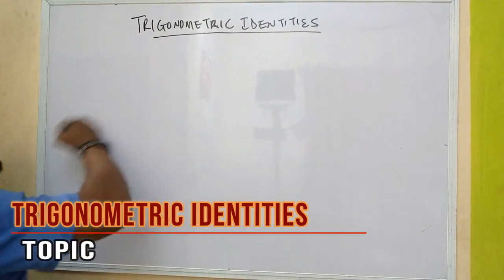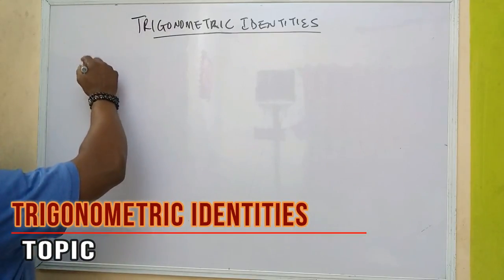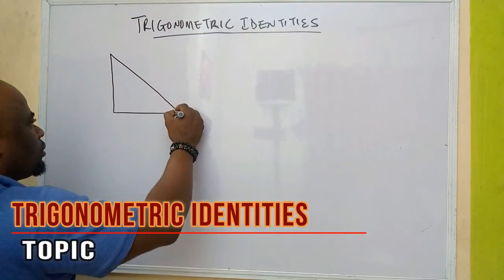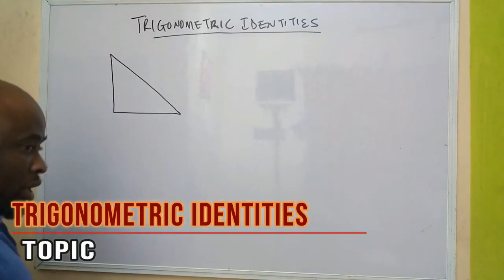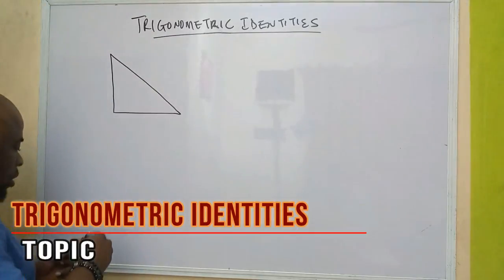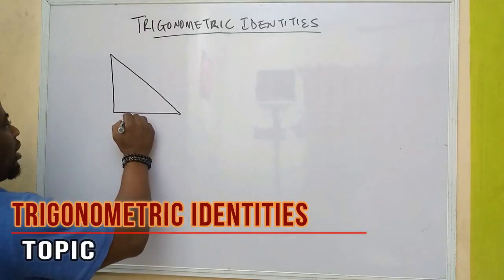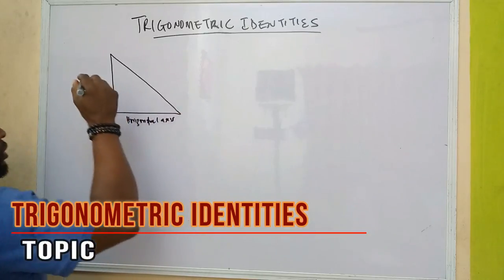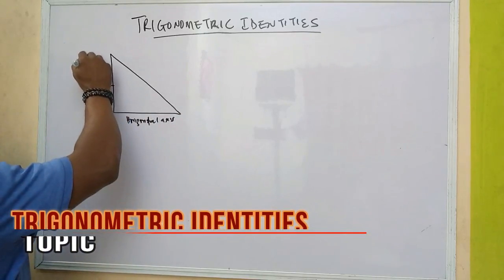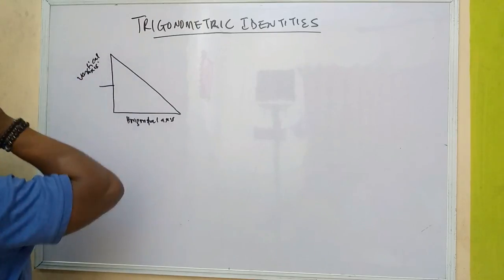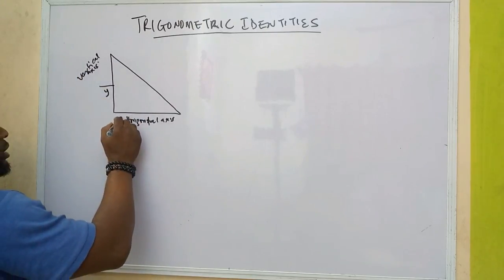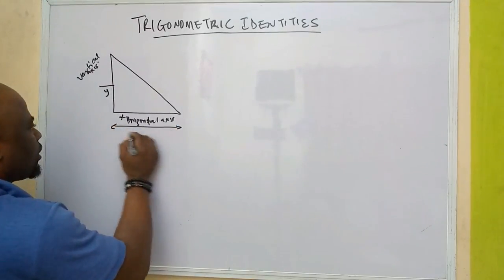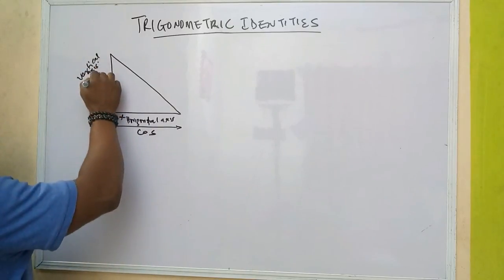Let us look at this. This is our triangle. We have these are the horizontal axis and these are the vertical axis. Here it is denoted by y, and here it is denoted by x. So along this side it's our cosine, and along this side it's our sine.